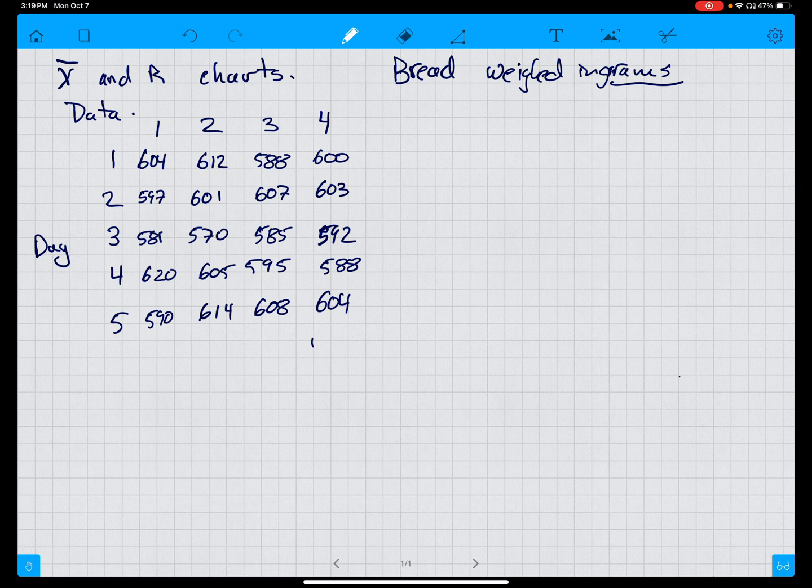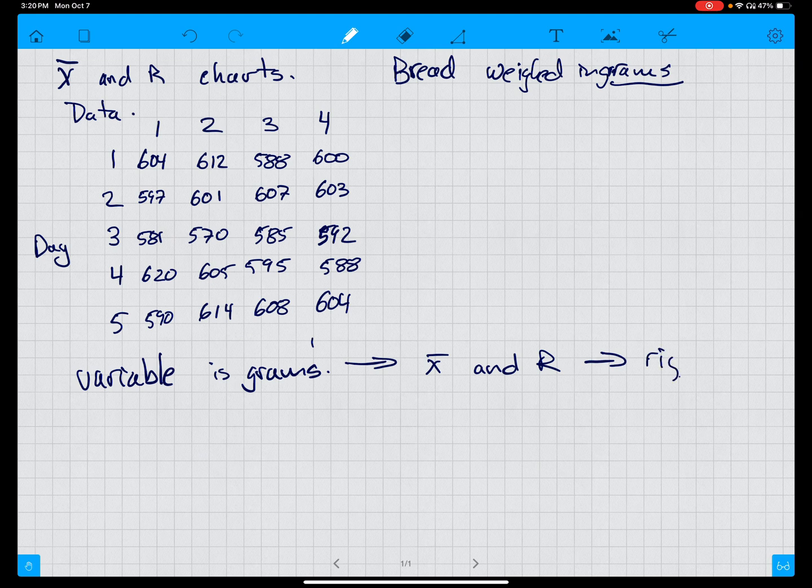We know these are grams and grams in weight are a variable. So because we have a variable, X-bar and R chart. This is how you would tell it is the right choice. In this case, we have to figure out what X-bar is. N is equal to four. We did it for five days, but each day we took four samples, so N equals four.